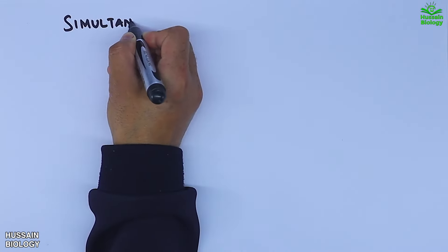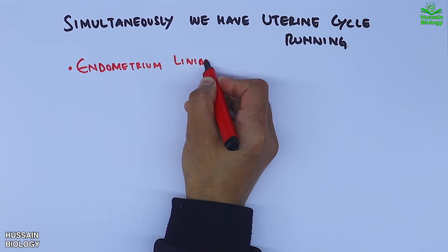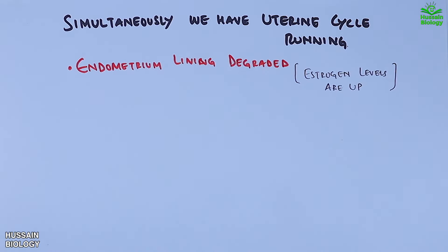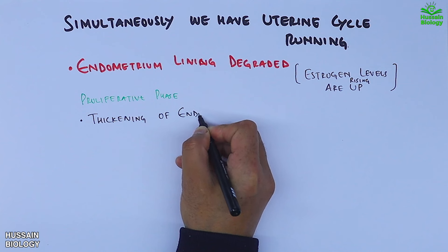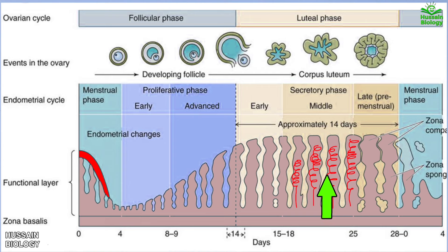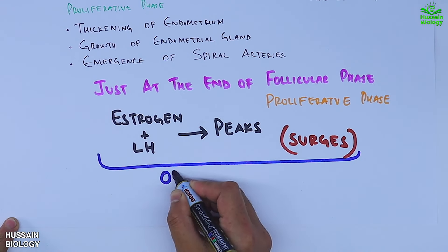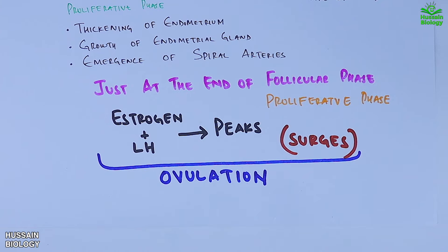Simultaneously, the uterine cycle is running. The endometrium lining is degraded — what we call periods — followed by the proliferative phase, where thickening of the endometrium occurs with growth of endometrial glands and emergence of spiral arteries. Just at the end of the follicular and proliferative phase, estrogen and LH peak in a surge. This peaking of hormonal levels leads to ovulation — the release of the egg.